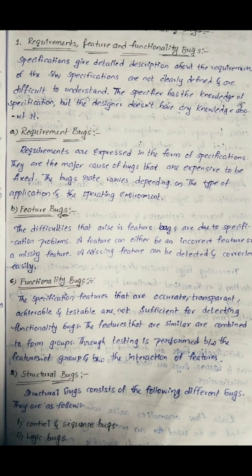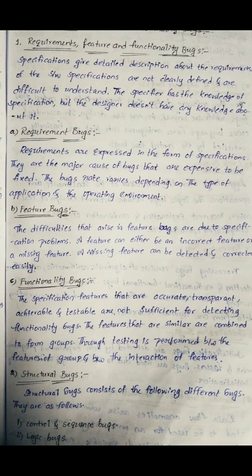These properties alone are not sufficient for detecting functionality bugs. To detect functionality bugs, you need to know where the functionality is actually required. Features that are similar or combined form groups, and testing is performed between the features of a group and between the interactions of those features.